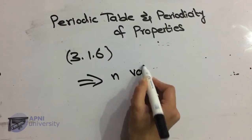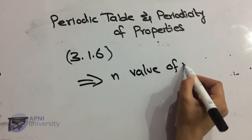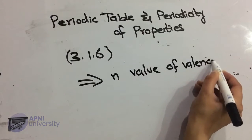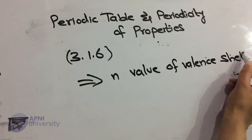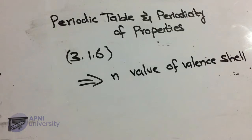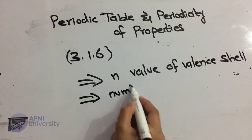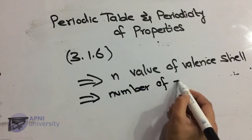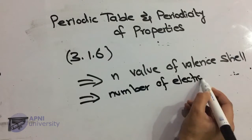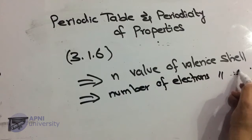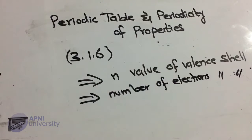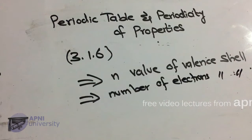Period number of an element indicates the n value of the valence shell. Whereas the group number of an element indicates the number of electrons in the valence shell. Basically, group number hamare paas valence shell mein jitne bhi electrons hain unko indicate karta hai.